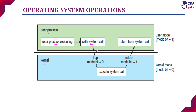Once the interrupt is raised, the mode bit value changes from 1 to 0, and the process switches to kernel mode. In kernel mode, it will execute the system call — what action it has to take, what code it has to execute. Once the execution is completed, the mode bit value changes back to 1. When the mode bit value is 1, control returns to user mode, and the suspended user process resumes its execution.